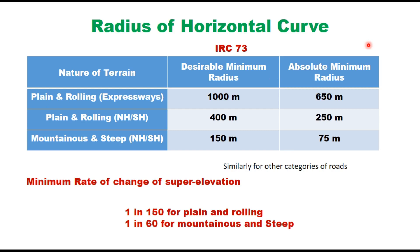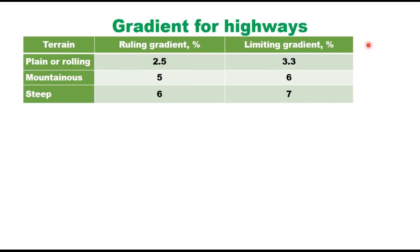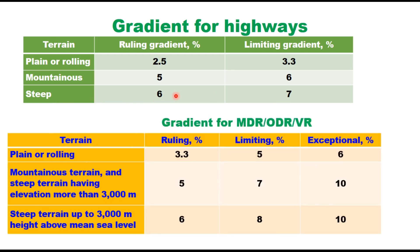Gradients for highways also depend upon terrain. For plain and rolling terrain, the ruling gradient is 2.5 percent, limiting gradient 3.3 percent, and steep gradient up to 6 to 7 percent. For lower category roads — MDR, ODR, and village roads — rolling, limiting, and exceptional gradients are specified for different terrain conditions. For example, for plane and rolling terrain it is 3.3 percent, for mountainous terrain 5 percent, and for steep terrain 6 percent, with an exceptional limit of 10 percent.